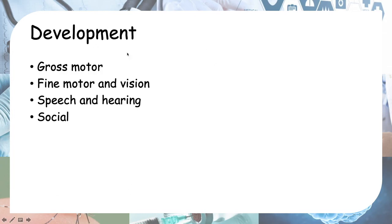Next we move on to developmental history — I'll make another video with more detail on this. In brief, you need to assess four categories: gross motor, fine motor and vision, speech and hearing, and social development. Developmental history is especially important for certain patients, such as babies born with cerebral palsy.